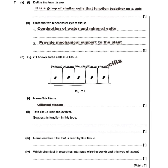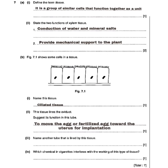For Roman numeral number two, it says this tissue lines the oviduct. The other name for the oviduct is the fallopian tube, which is found in the female reproductive organ. The question asks: suggest its function in this tube. The function of ciliated tissue in the oviduct is to move the egg or the fertilized egg toward the uterus for implantation.